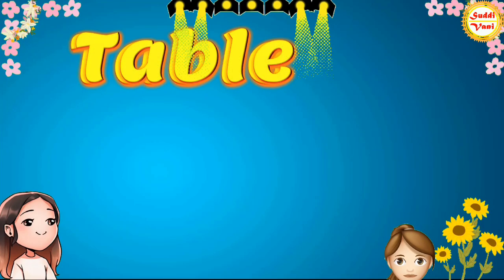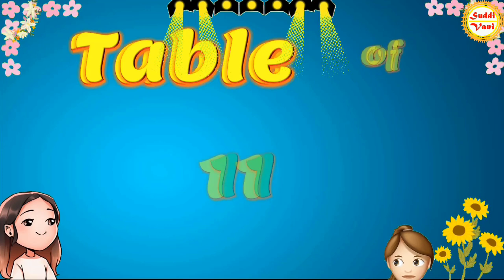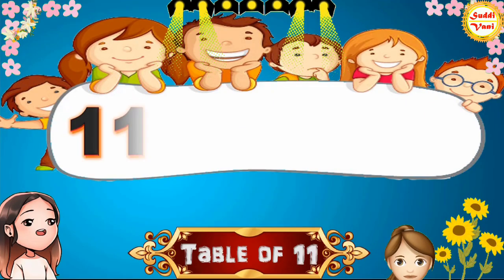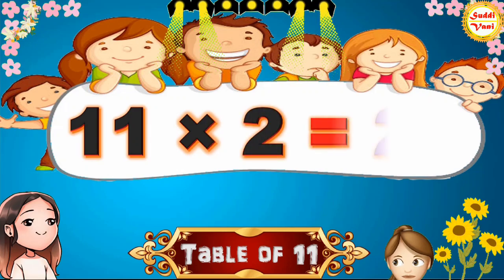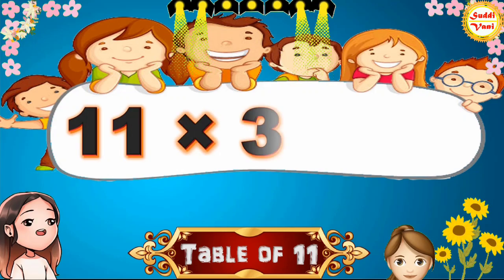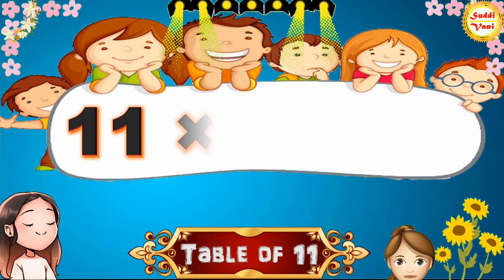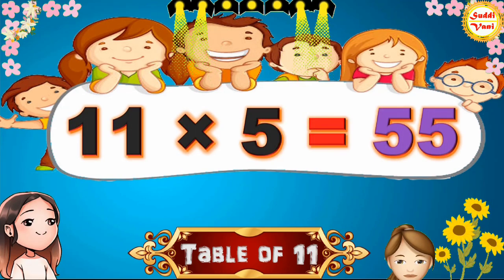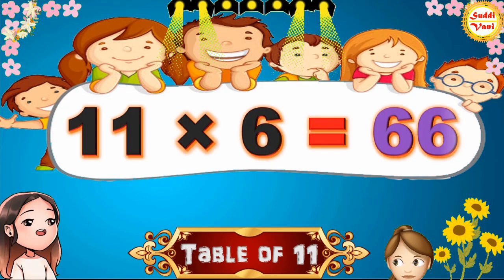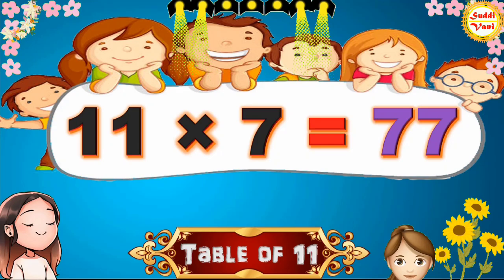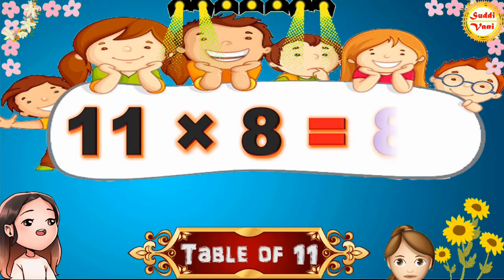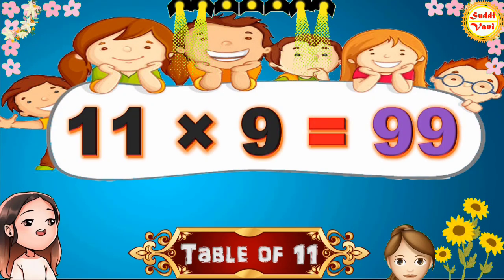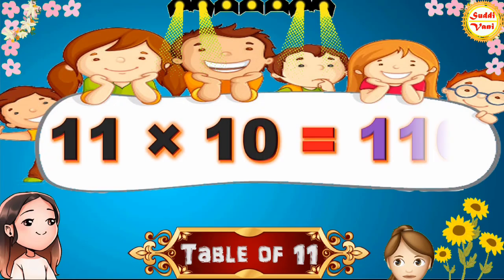Hello children, we will learn table of 11. 11 × 1 = 11, 11 × 2 = 22, 11 × 3 = 33, 11 × 4 = 44, 11 × 5 = 55, 11 × 6 = 66, 11 × 7 = 77, 11 × 8 = 88, 11 × 9 = 99, 11 × 10 = 110.